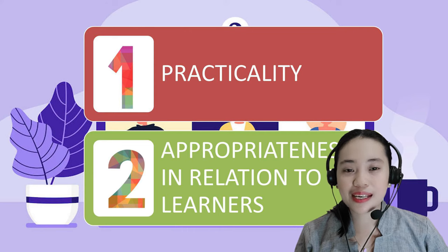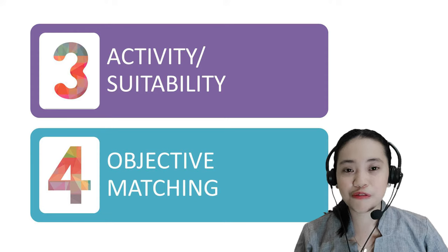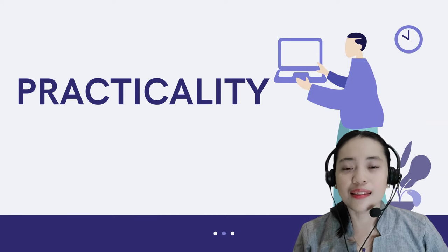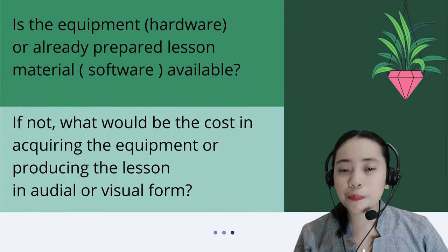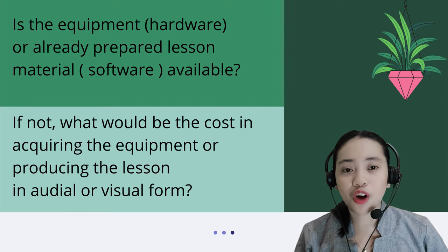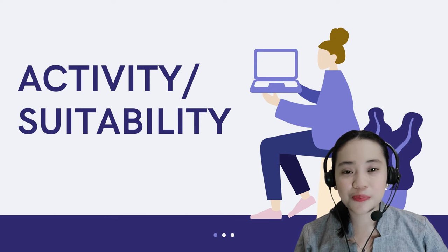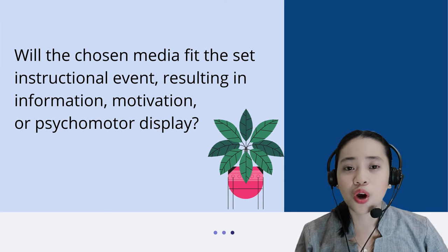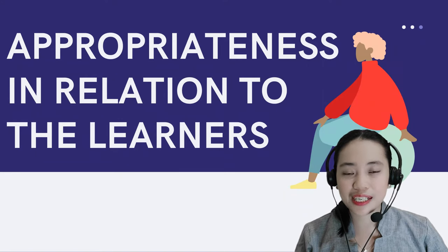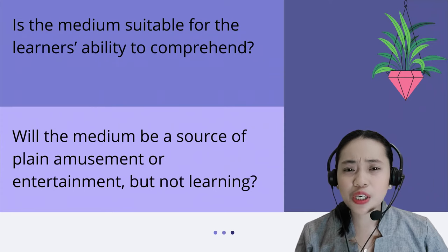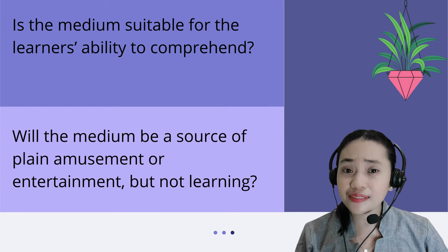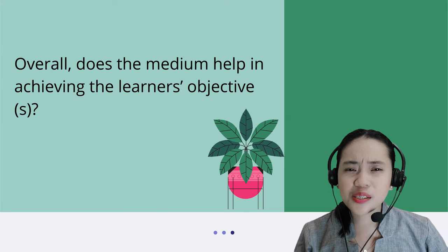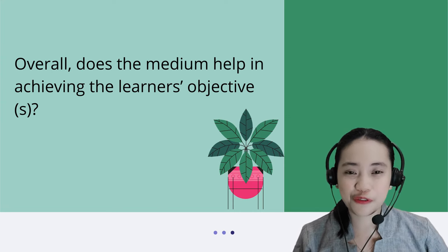The factors in technology selection are: practicality, appropriateness in relation to the learners, activity suitability, and objective matching. Practicality answers the question: is the equipment or already prepared lesson material available? If not, what would be the cost of acquiring the equipment or producing the lesson in audio or visual form? Activity suitability answers: will the chosen media fit the set instructional event resulting in information, motivation, or psychomotor display? Appropriateness asks: is the medium suitable for the learners' ability to comprehend? Will the medium be a source of plain amusement or entertainment but not learning? And objective matching asks: overall, does the medium help in achieving the learners' objectives?